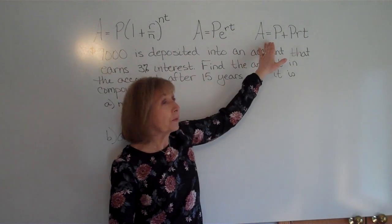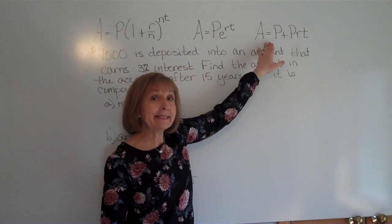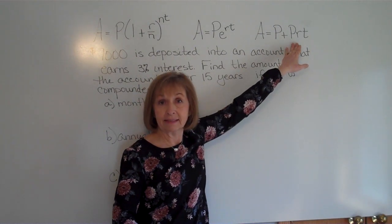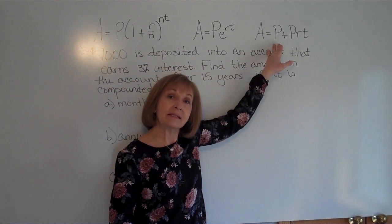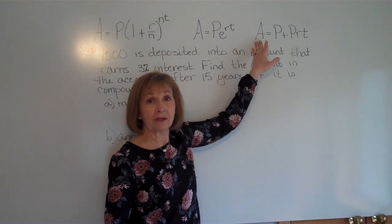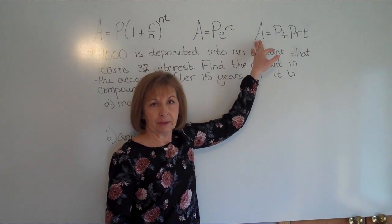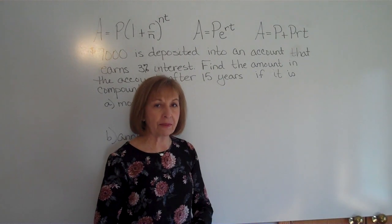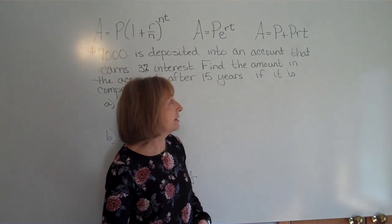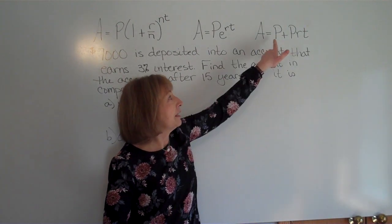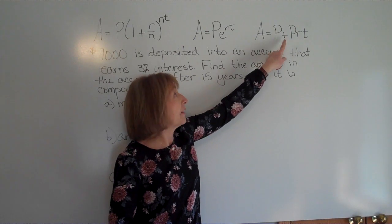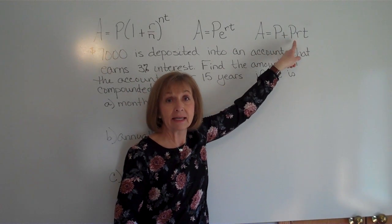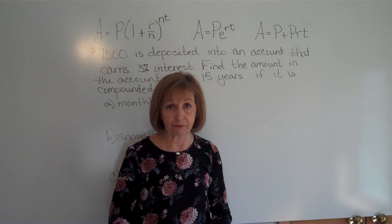The third formula is A equals P plus P times R times T. This gives the amount in the account for simple interest — no compounding. They just pay you on the original principal. P is the principal, and then you add the interest which is principal times rate times time, with the rate in decimal form.